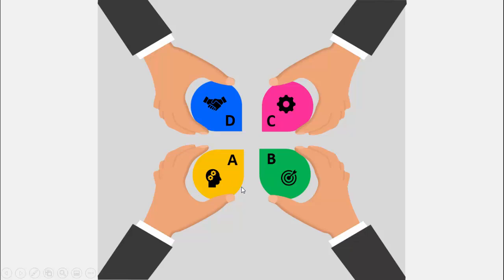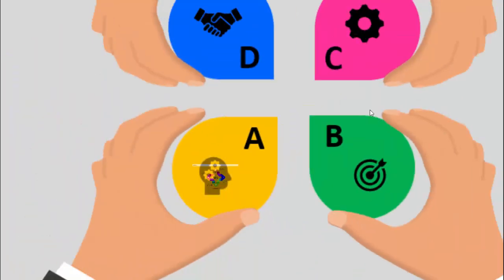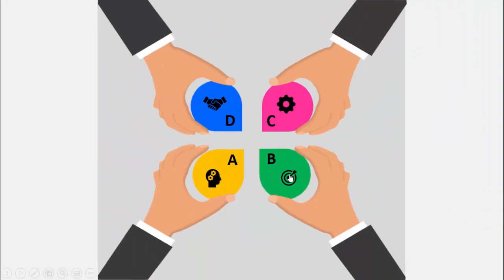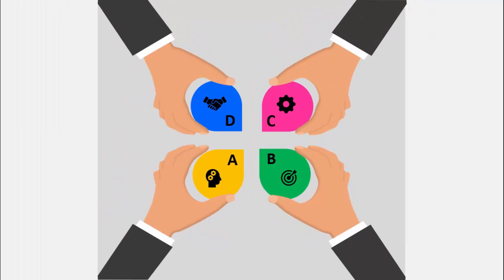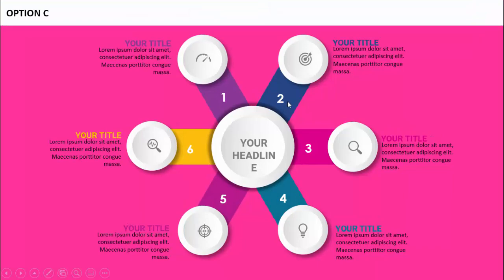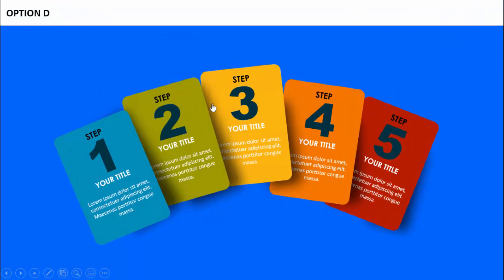When I take my mouse over to this particular icon, the icon is changing — that means the zoom feature is available. When I click it, you can see this is option A and my design. When I click it again, it goes back to the original slide. Then clicking option B goes to option B, click again goes back. Then option C and option D — same behavior.